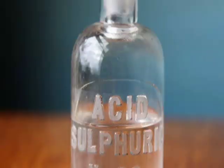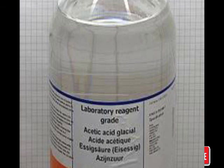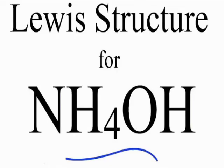Weak electrolytes are compounds which undergo only partial decomposition. The best examples of weak electrolytes are ammonium hydroxide and acetic acid — compounds which exhibit an alpha (α) value less than one, meaning incomplete degree of dissociation.